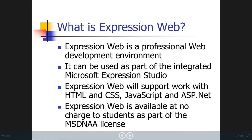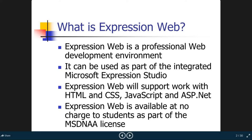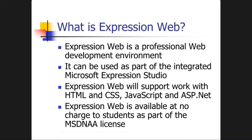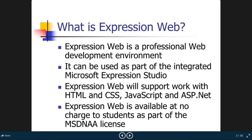To upgrade our web pages, we can also create programs using JavaScript and ASP.NET. Expression Web is available at no charge to students as part of the MSDNA license, or Microsoft Developer Network Academic Alliance. This means we can download Expression Web for free — we don't need to purchase a license, as this is open source.